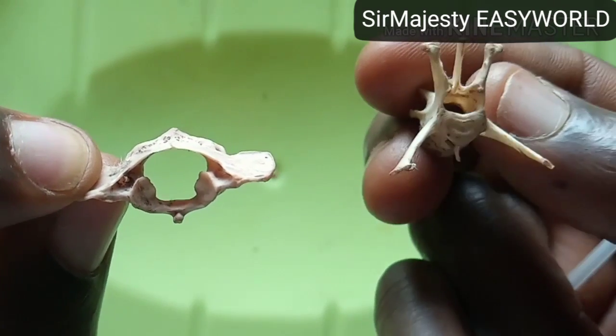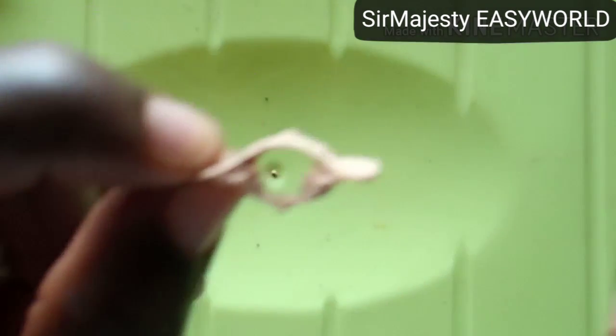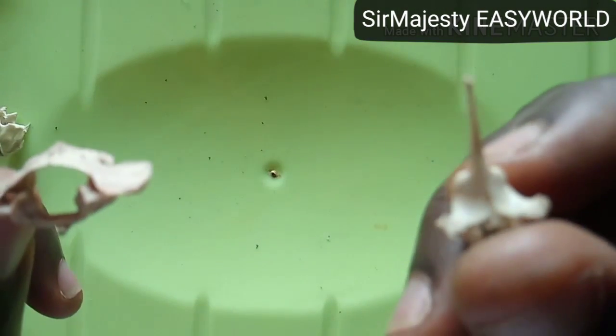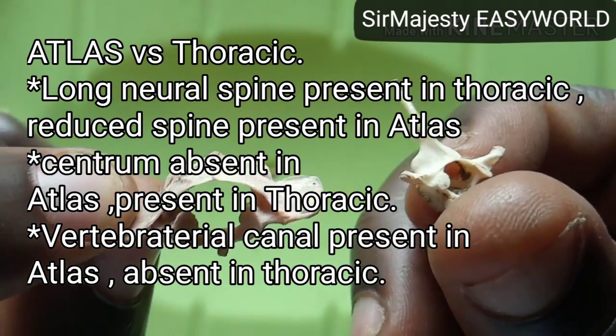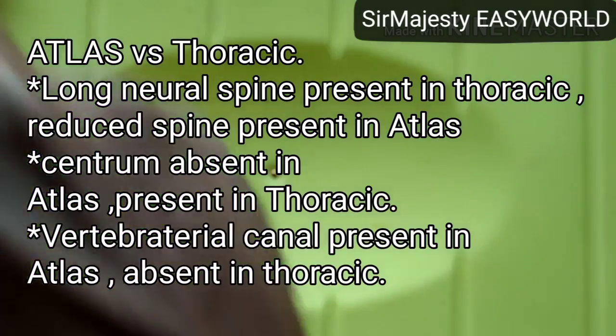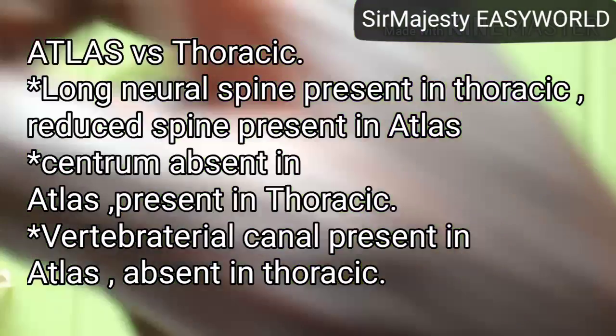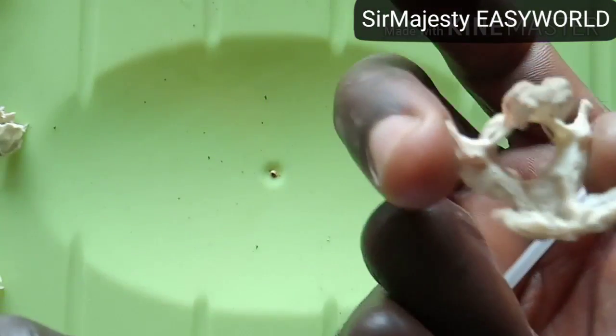When you come to the lumbar vertebra, there is no vertebrarterial canal. The atlas has the vertebrarterial canal, and its distinguishing feature is that it lacks a centrum — the centrum is instead occupied by the odontoid process of the axis. Comparing atlas and thoracic vertebra, the atlas has a less prominent transverse process.